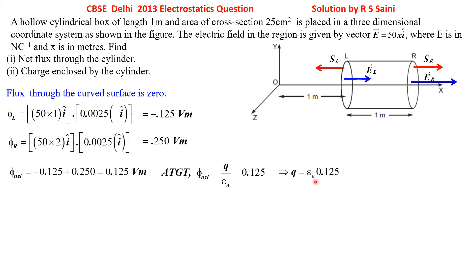Value of ε₀ would be given in the question paper. If you are able to mug it up, then better. Otherwise copy it from the question paper. 8.854 into 10 power minus 12. And on removing this decimal, I will get 1000 below in the denominator. 125 cancels with 1000 as 8. 1 by 8 of 8.54 into 10 power minus 12 coulomb is the charge enclosed.